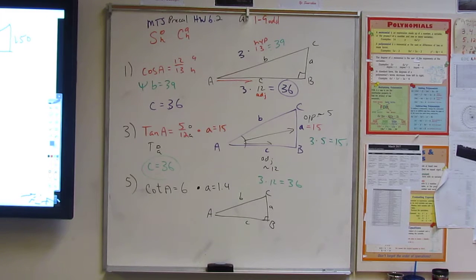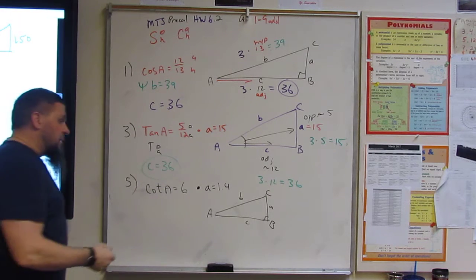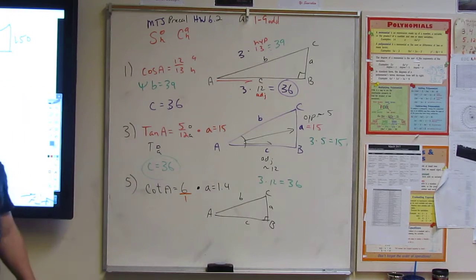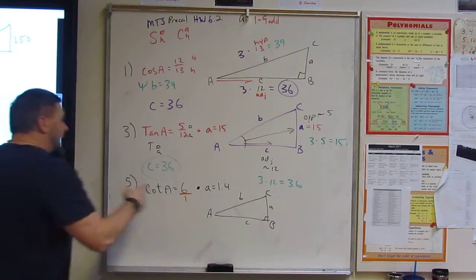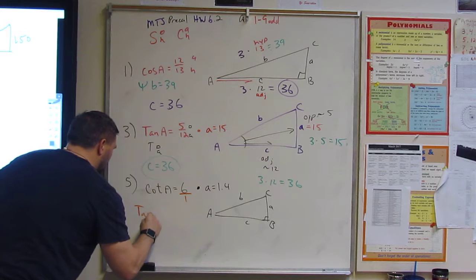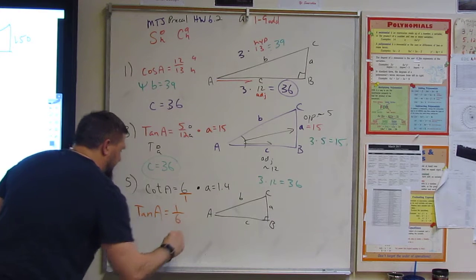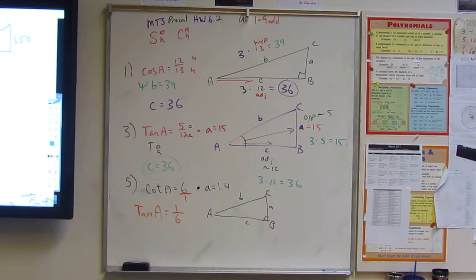So, we need to think about what is going on here. This one seems a little harder. When we think of 6, we've got to think of a fraction. Right? So, when I think of 6, I think of 6 over 1. Does that make sense? So, if that's the case, then what would be the tangent of A? So, tangent of A would equal 1 over 6. Does that make sense?